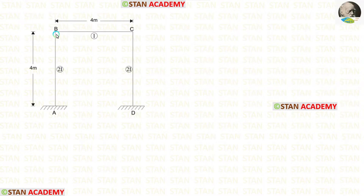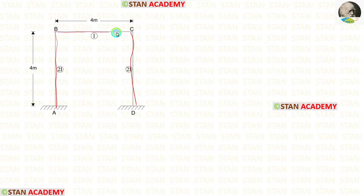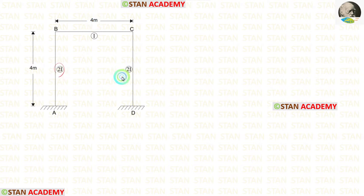In this frame there are two columns, column AB and column CD. Also there is a beam BC. The height of the columns is 4 meters and the length of the beam is also 4 meters. The moment of inertia for the columns is 2I and the moment of inertia for the beam is I.